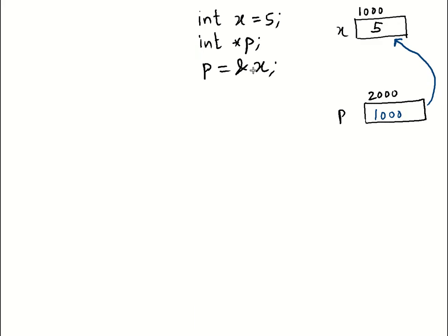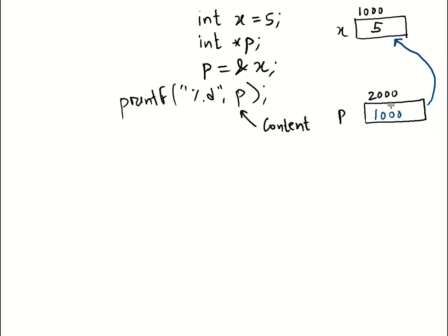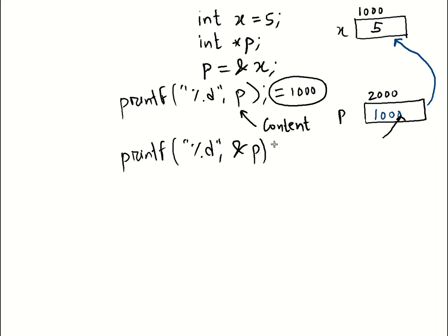Now if I print 'p' with 'printf("%d", p)', what does it print? Whenever I write 'p' it prints the content of 'p'. Since 'p' is a pointer, its content is always an address — so this prints 1000. If I print 'printf("%d", &p)', I'm printing the address of 'p' itself, which is 2000, so this prints 2000.